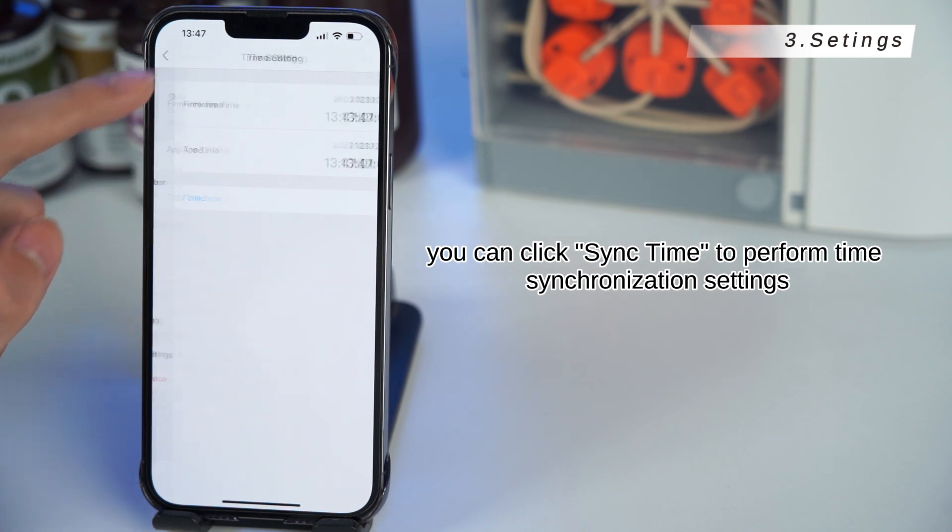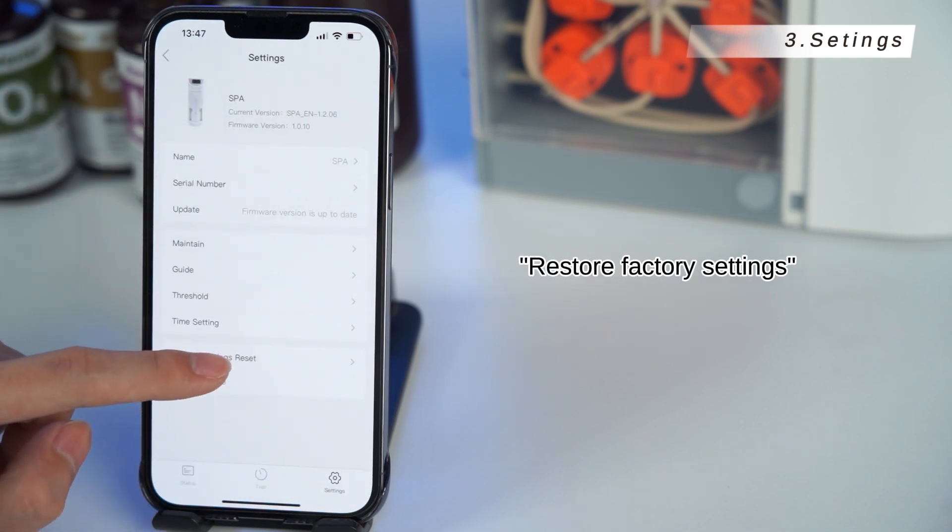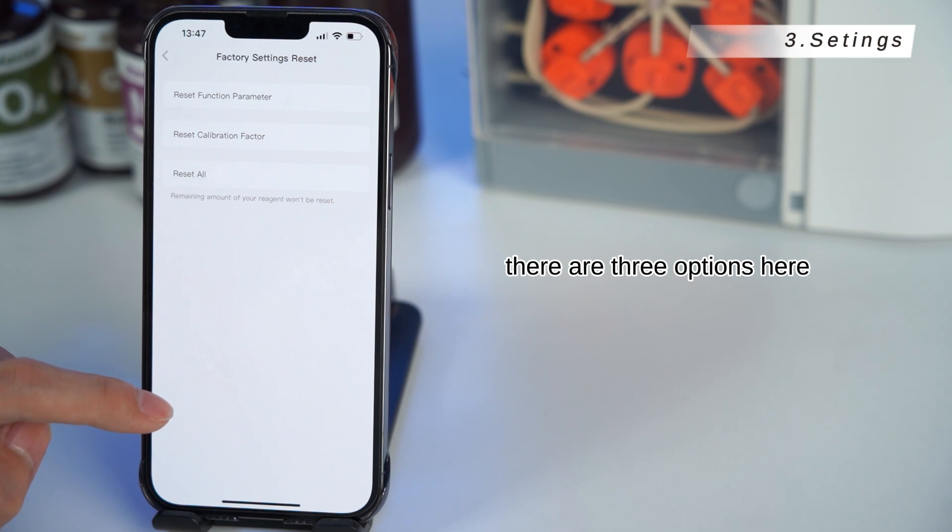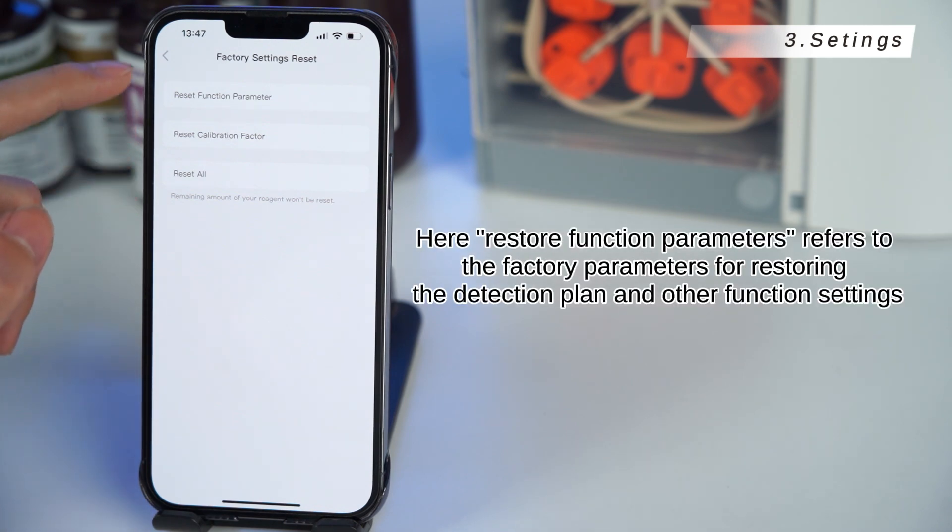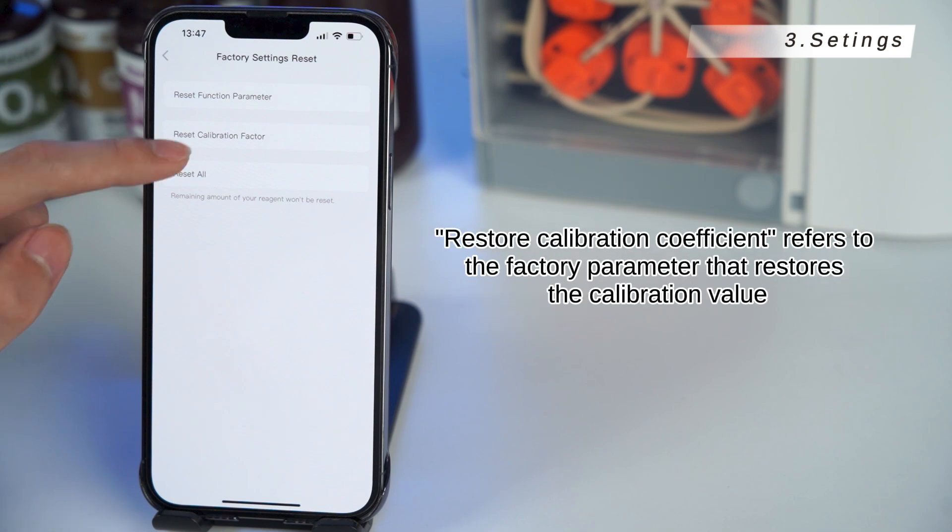Restore factory settings, there are three options here. Restore function parameters refers to the factory parameters for restoring the detection plan and other function settings. Restore calibration coefficient refers to the factory parameter that restores the calibration value.